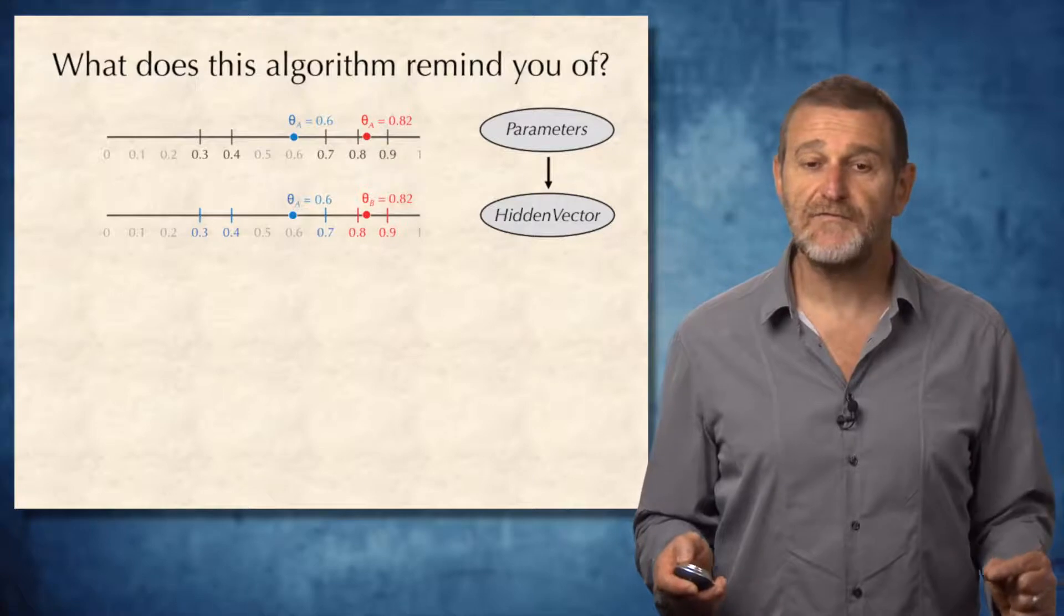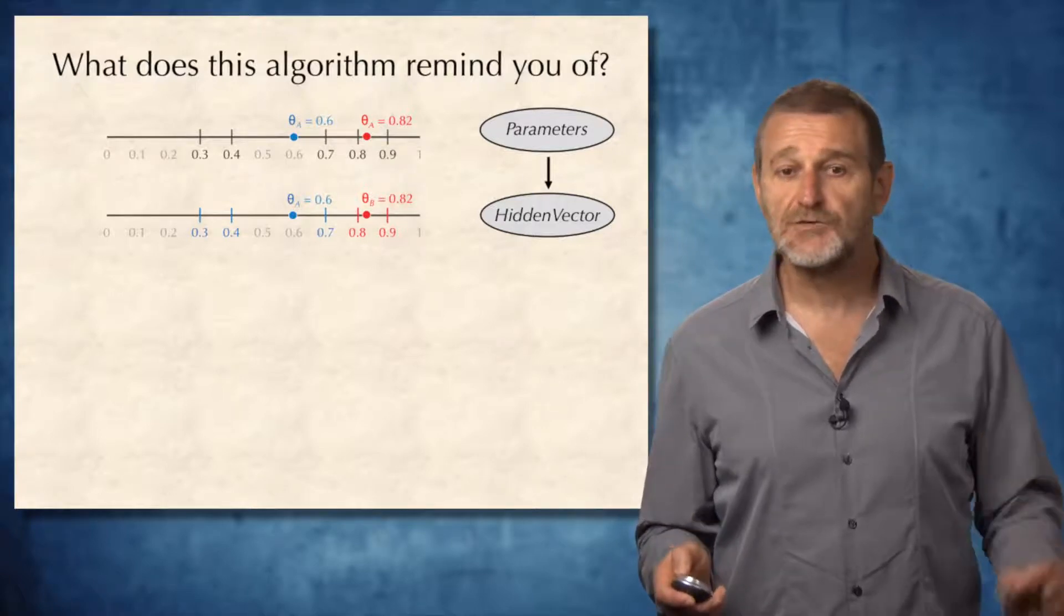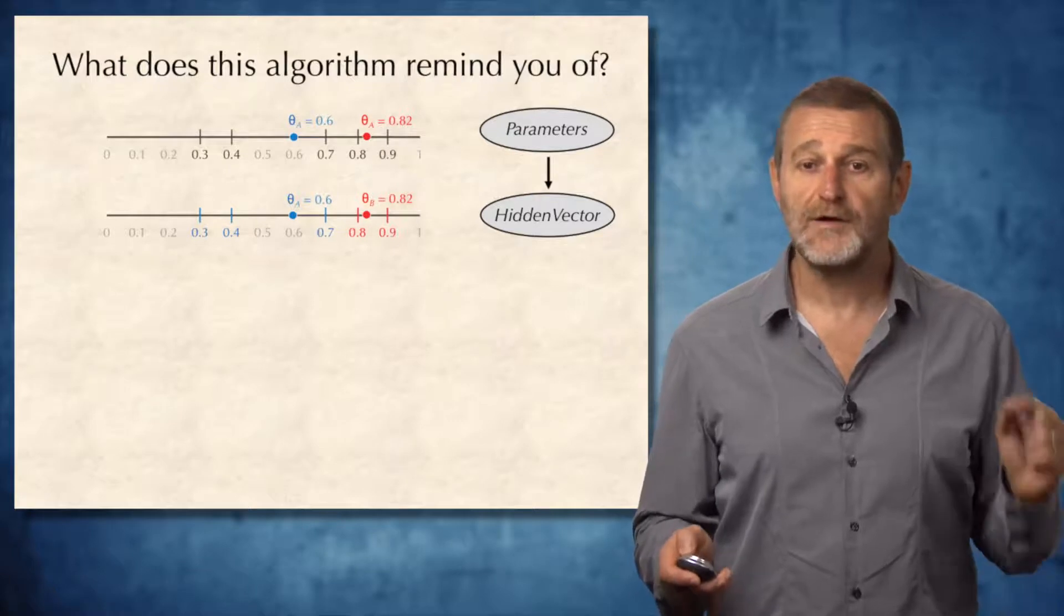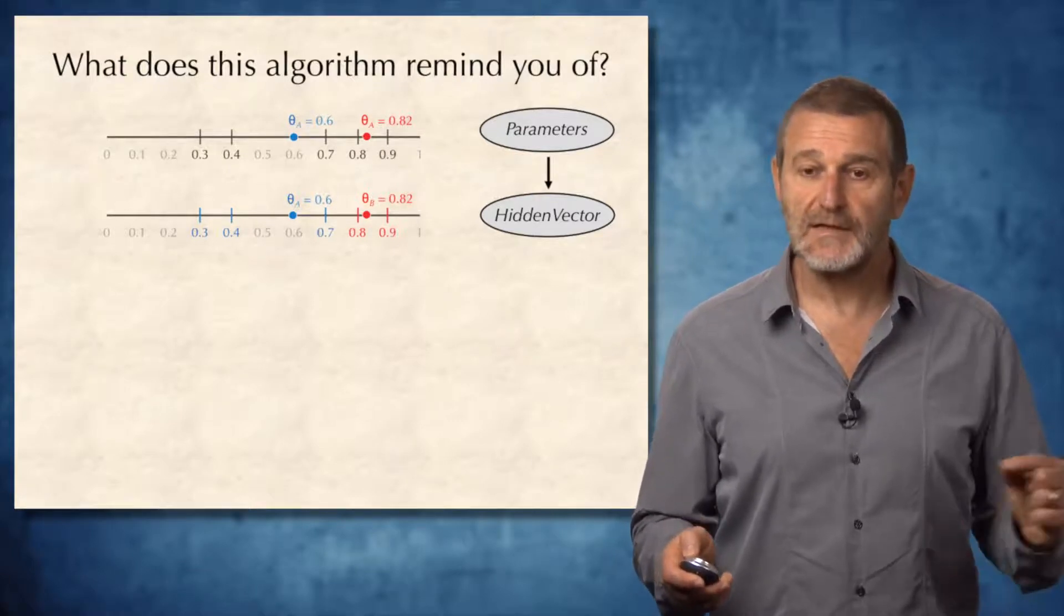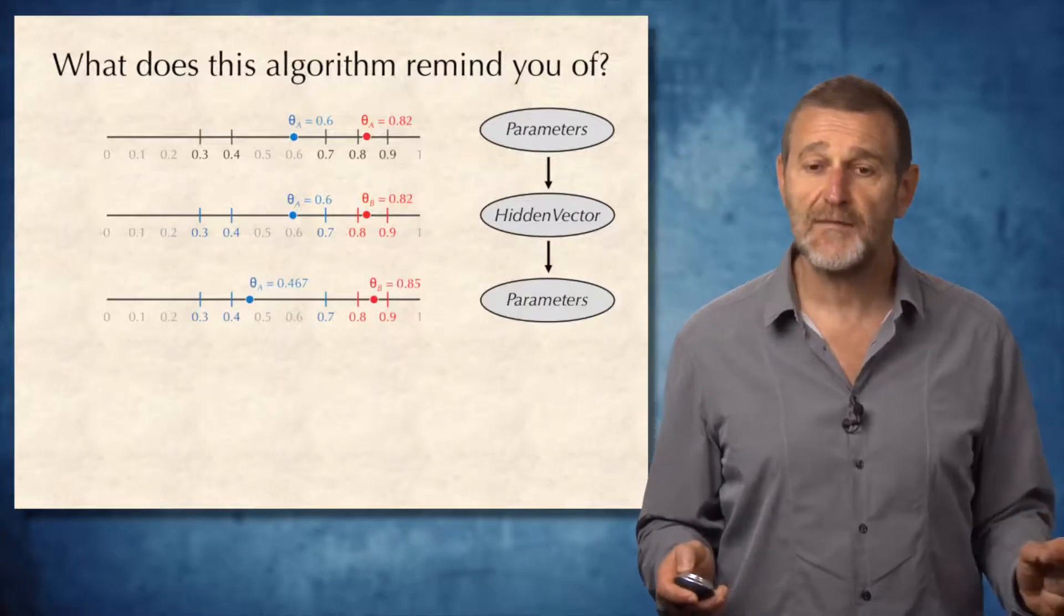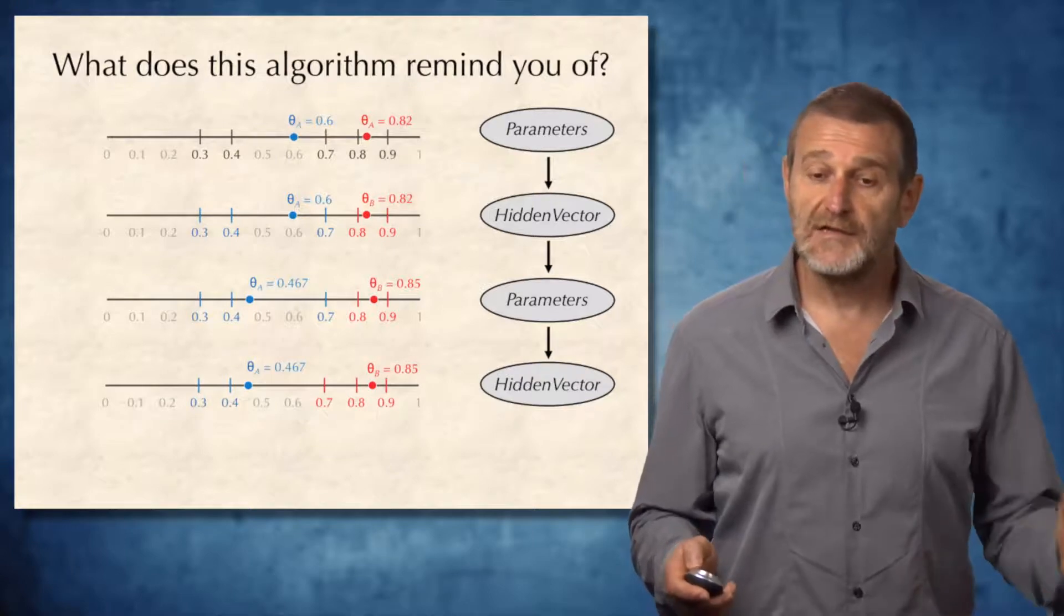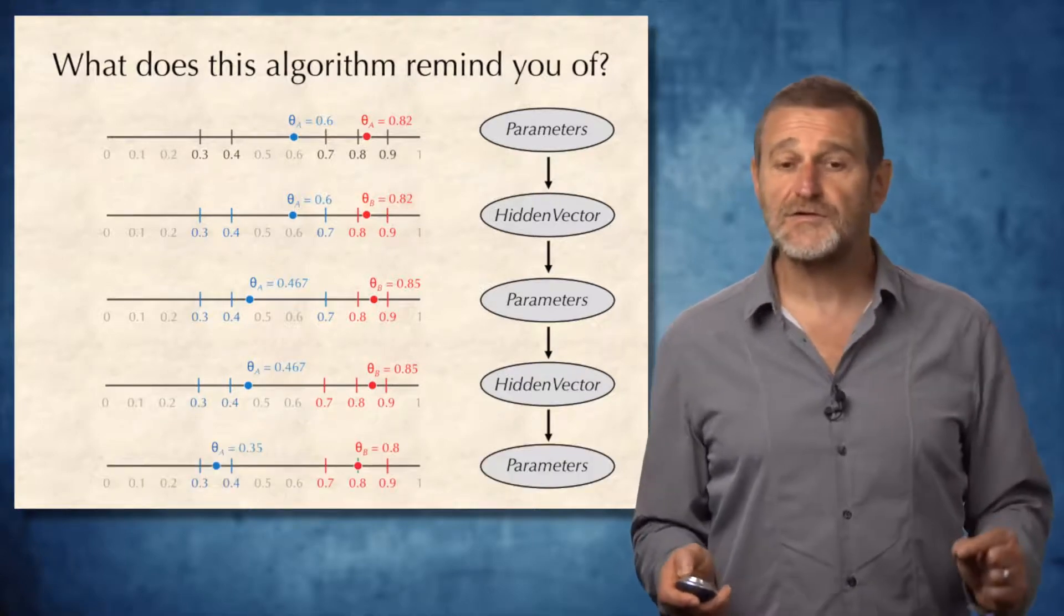As soon as parameters are selected, we form a hidden vector. So we assign each series of flips to either blue coin or red coin. As soon as a hidden vector is derived, we can use this hidden vector to derive new parameters. As soon as this new parameter is derived, we construct new hidden vector and we iterate until convergence.